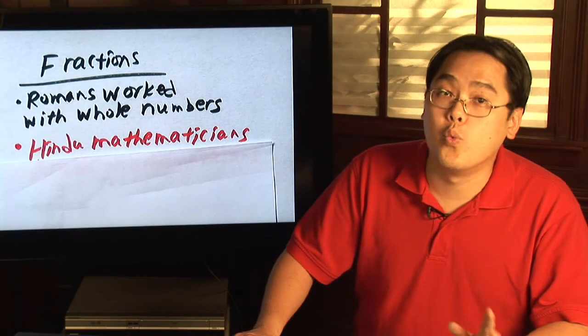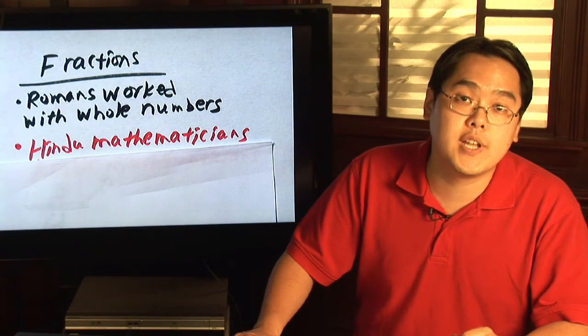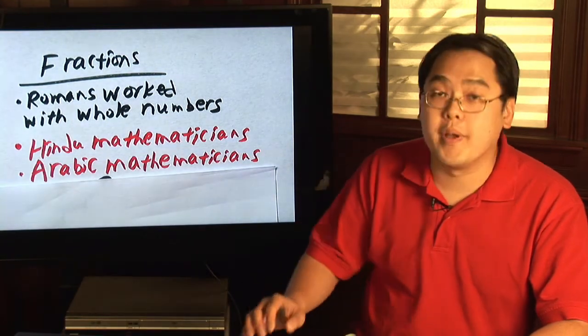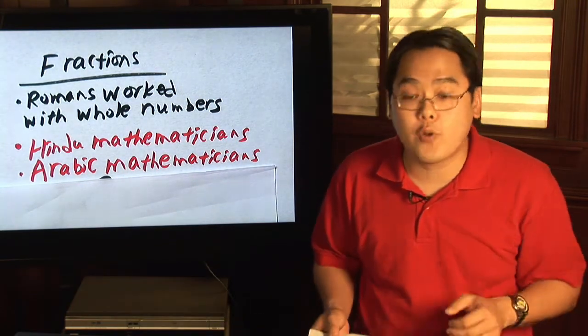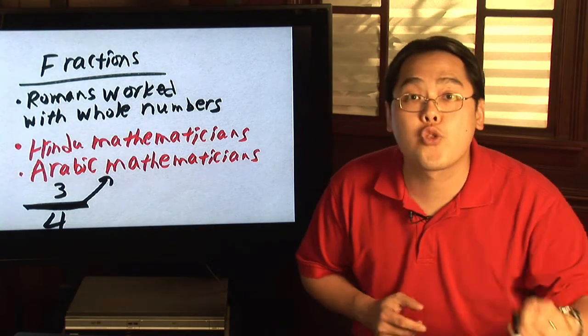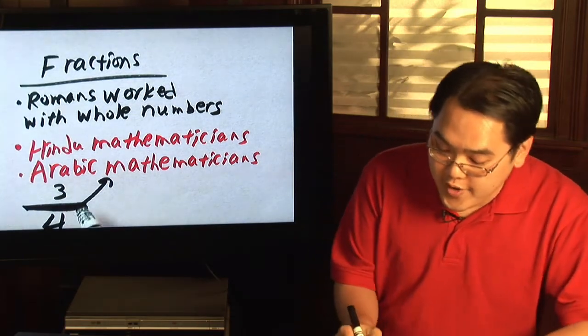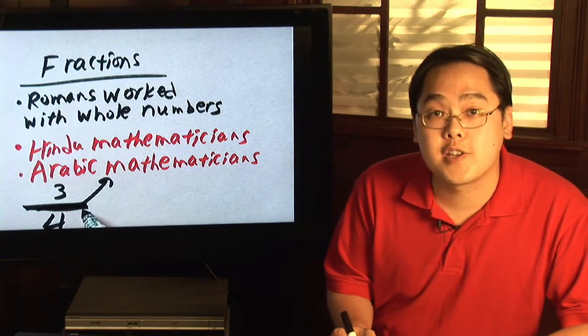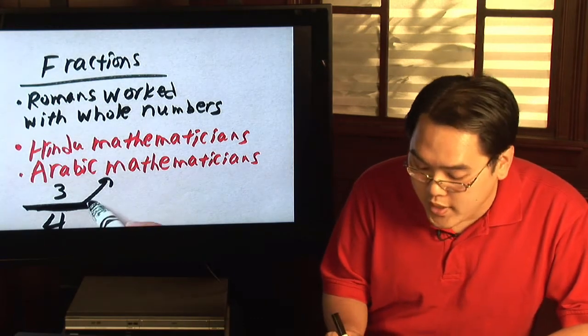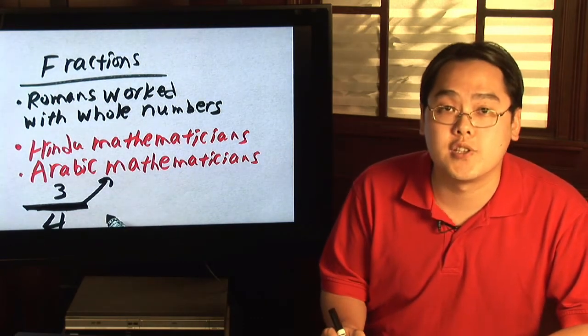But the one type of terminology and notation that we can thank the Arabic mathematicians for is that of the fraction bar. Take for example, the fraction three quarters. Three fourths has a dividing bar. Well, that fraction bar can be credited to the Arabic mathematicians. Because without it, who knows how we might be writing fractions to this day.